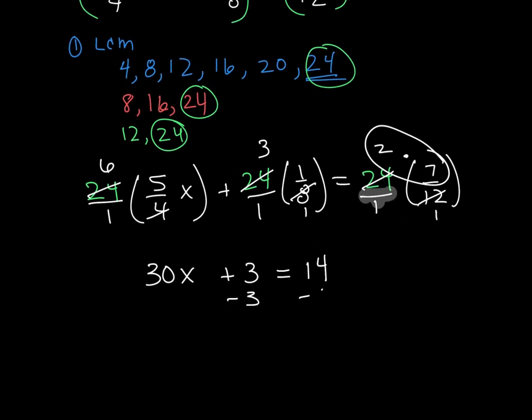I'm going to subtract 3 from both sides. And I'm left with 30x is equal to 11. And finally, I divide. So my final answer here is x is equal to 11 over 30.